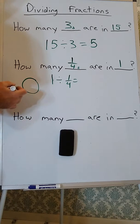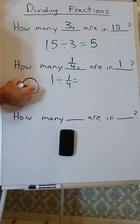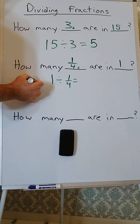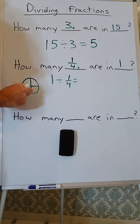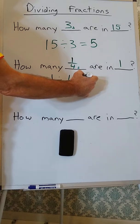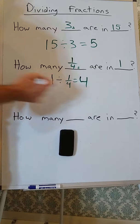Let's say I have 1 pizza, and I divide it into fourths. How many fourths are in that 1 pizza? 1, 2, 3, 4. 1 divided by 1 fourth is equal to 4.